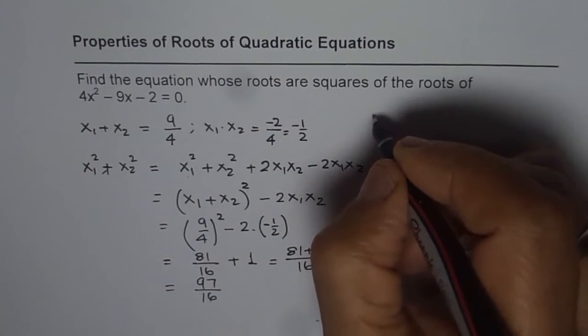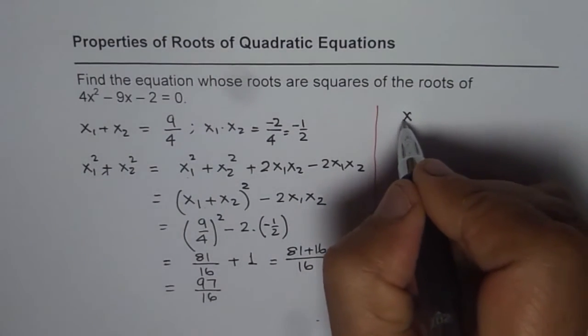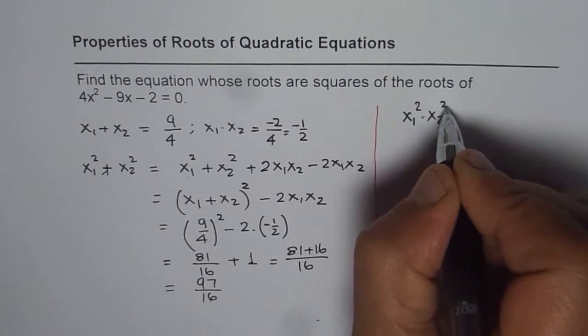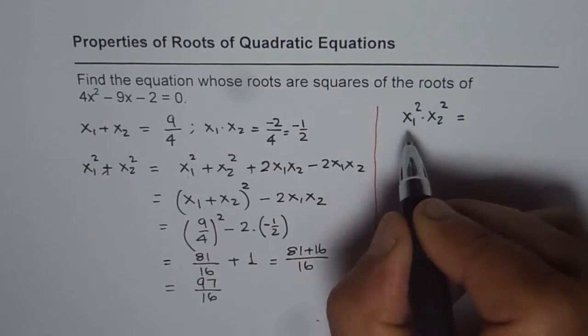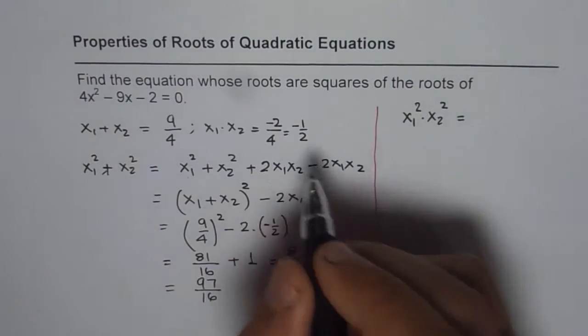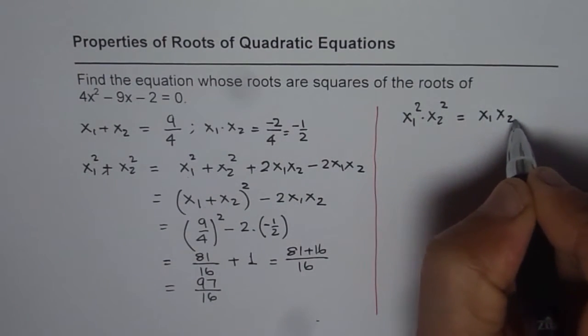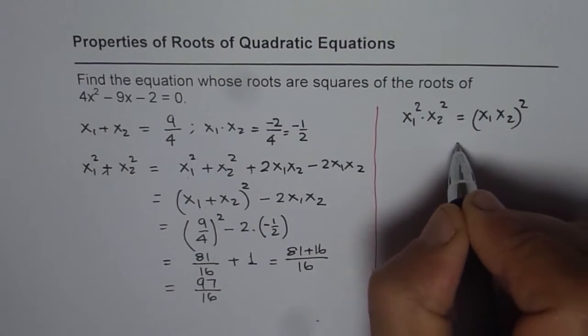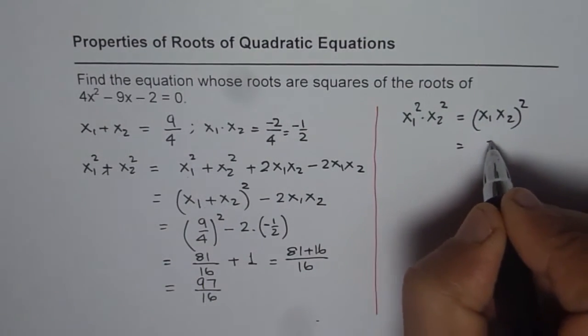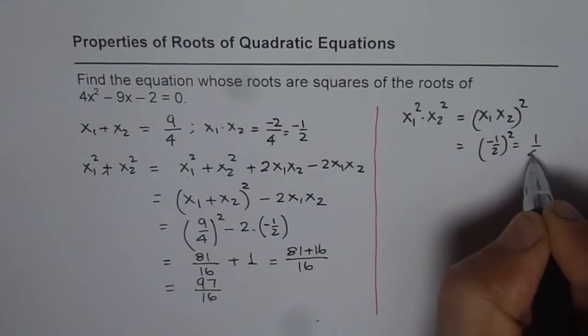Now let us find the product of these. x₁² times x₂² will give us the product, so that is (x₁x₂)². x₁x₂ is minus half, so we can write this as (x₁x₂)². And you know x₁x₂ is minus half, so it is (-1/2)² which equals 1/4.